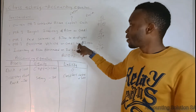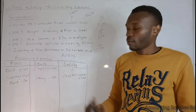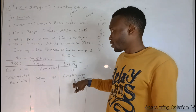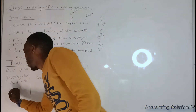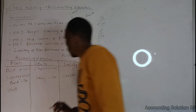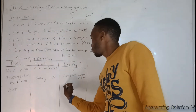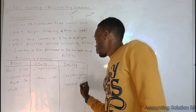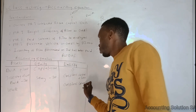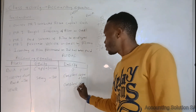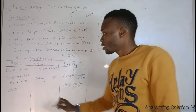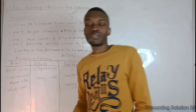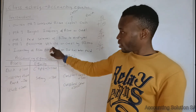Transaction 4: Mr. J purchased a vehicle on credit for R2,000. Vehicle is an asset and credit means liability, so we write vehicle under assets and creditors control under liability. Our liability goes up and our vehicle asset increases because we bought a vehicle and now have more assets.